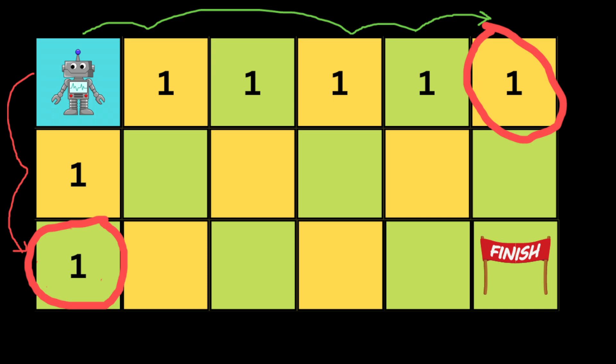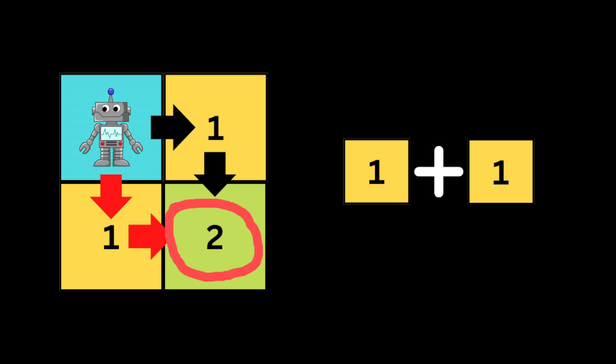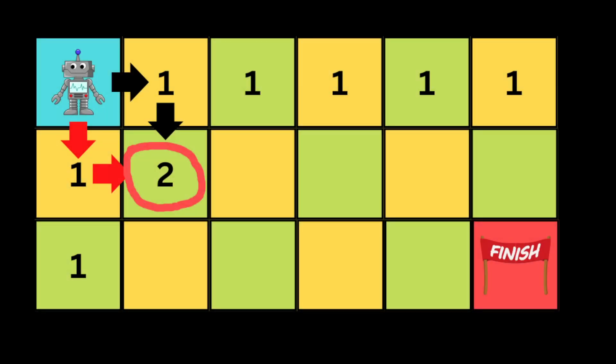Since we can only move down or right, there is only one path to reach any square in the first row or first column. But for a square at an interior position, we can move right then down, or down then right — giving us two paths. This number equals the value from the square above plus the value from the square to the left, because the only way to reach any square is from the top or from the left.